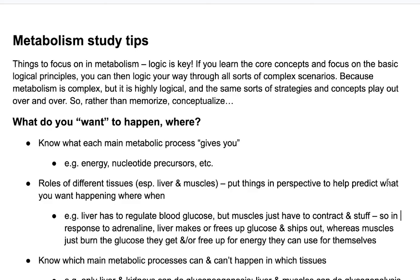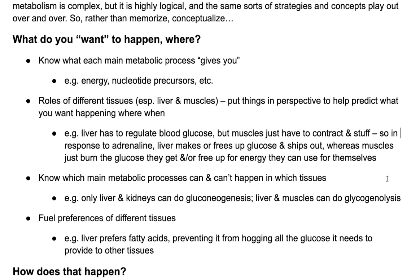So rather than memorize, conceptualize. Some of the things to focus on: what do you want to happen where? Know what each main metabolic process gives you — glycolysis, the citric acid cycle, gluconeogenesis, glycogenolysis, the pentose phosphate pathway, beta oxidation, lipogenesis — there are so many different pathways. But you can think about what are the products of those pathways, and therefore when would you want to do what?